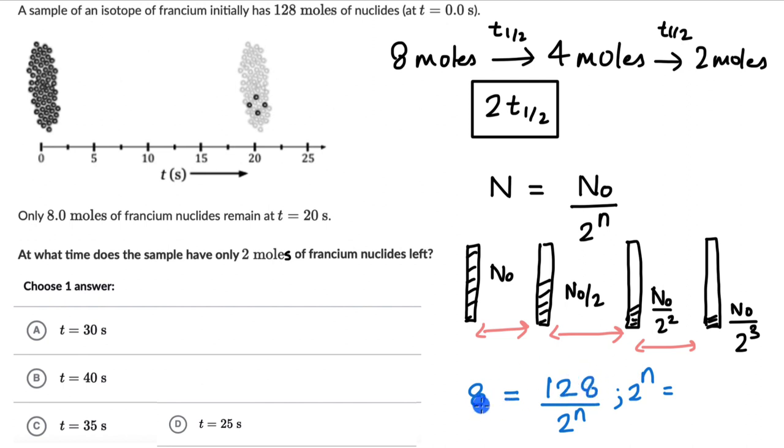This would be 64 divided by 4. This would be 16 and we can write 16 as 2 to the power 4. So after 4 half lives, we have 8 moles remaining.